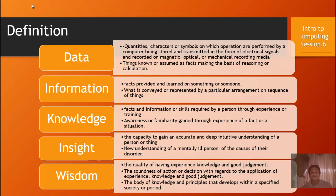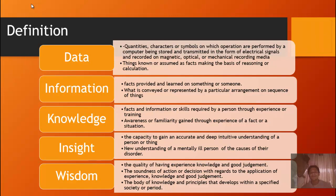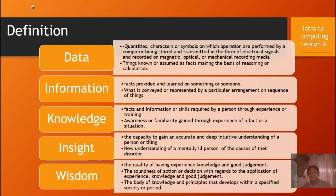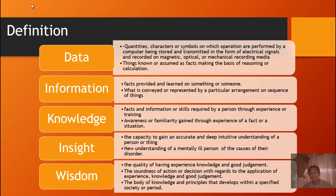What is information? Information are facts provided about something or someone — what is conveyed or represented from a particular arrangement or sequence of things. What is knowledge? Knowledge are facts and information or skills acquired by a person through experience or training. It is an awareness and familiarity gained through experience and study.